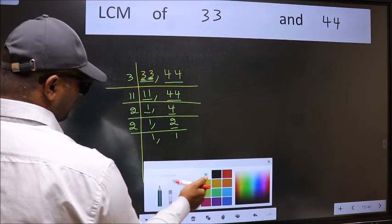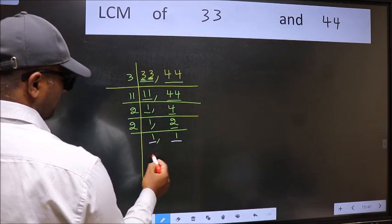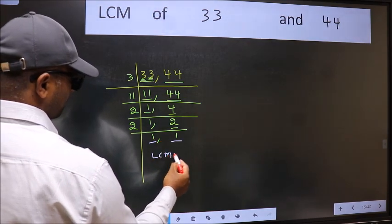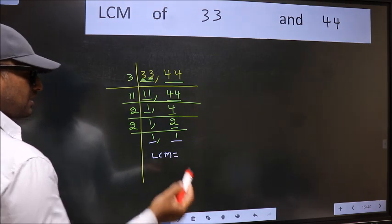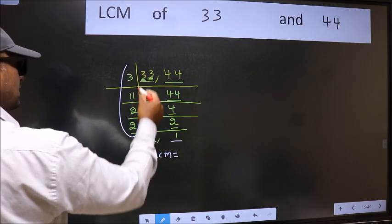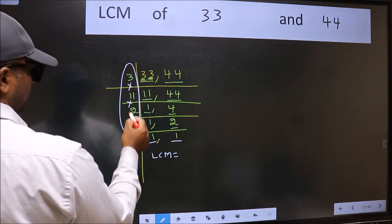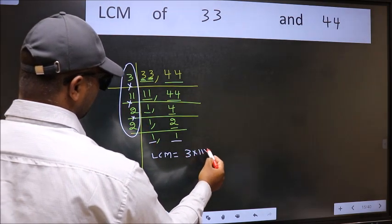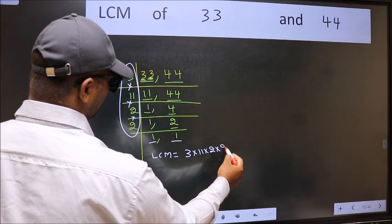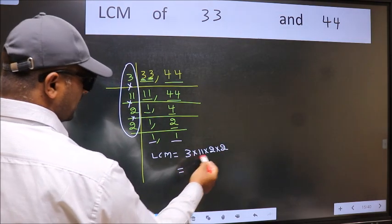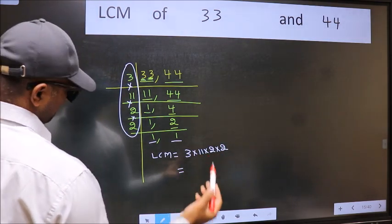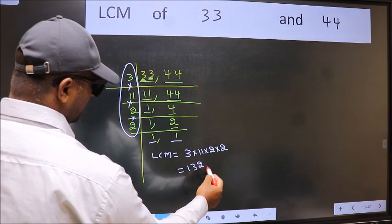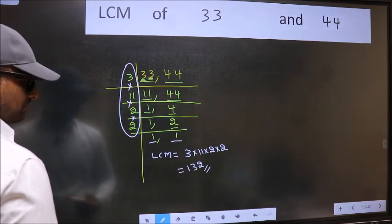So we got 1 in both the places. So our LCM is the product of these numbers. That is 3 into 11 into 2 into 2. When we multiply these numbers, we get 132 is our LCM.